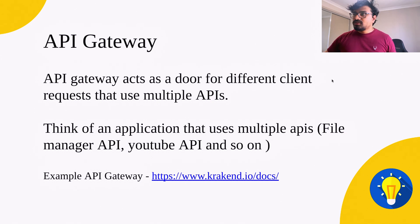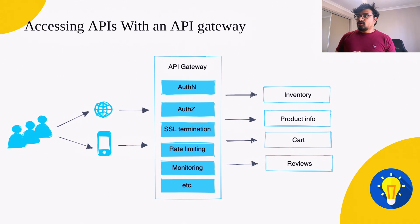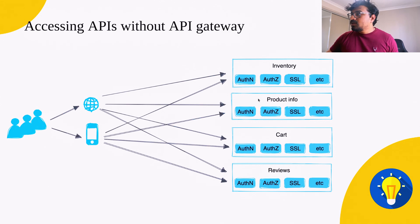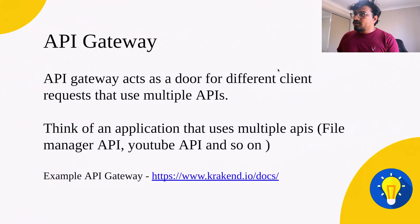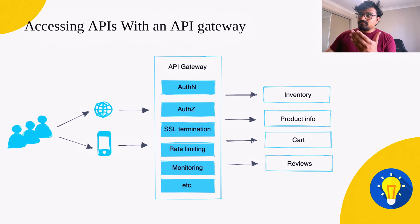Looking at the diagram, you can see clearly where the API gateway comes into play. The API gateway sits between a bunch of APIs and the users. Notice that things like authentication, authorization, and social features that were previously inside each API have now moved inside the API gateway. We'll discuss that in future slides.